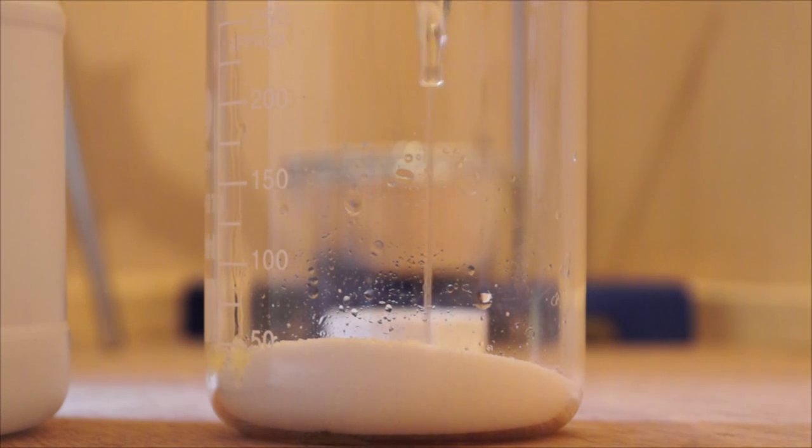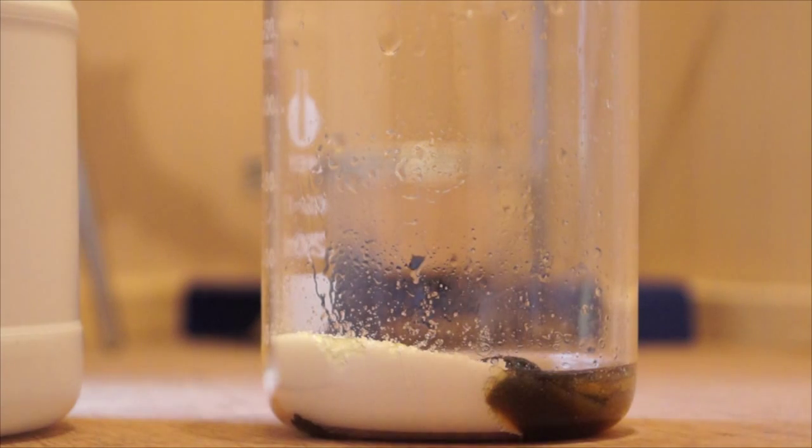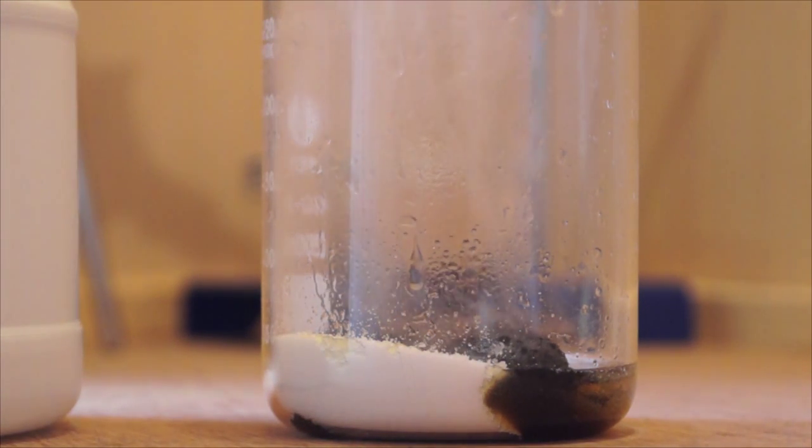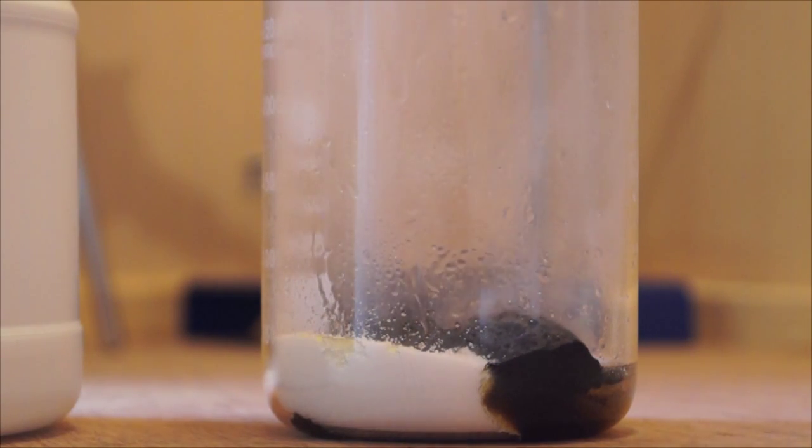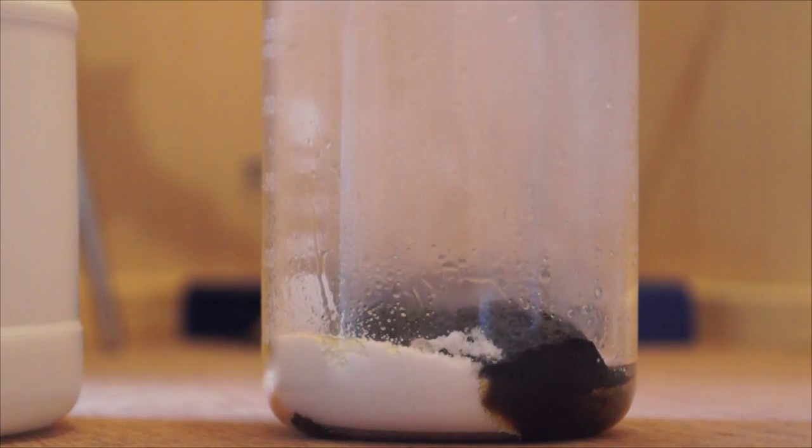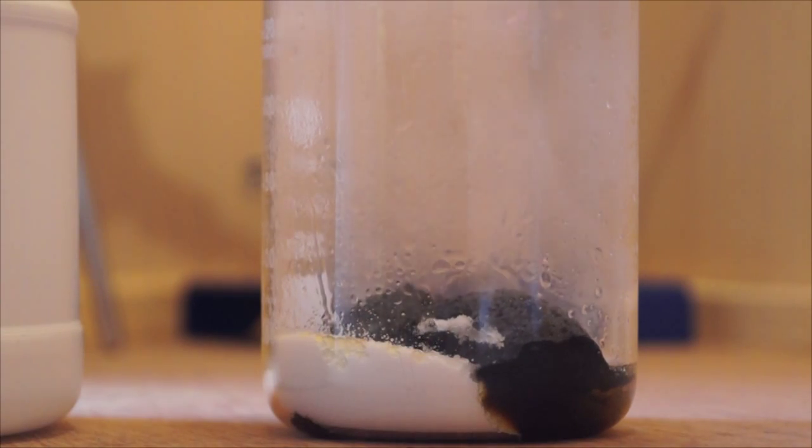Carefully add the sulfuric acid to the sugar and watch the reaction take place. As you can see, a black solid is formed and seemingly grows out of the beaker. I used very little sugar and acid, thus the snake that grew from the beaker was very small as I didn't want to create too much of a mess.